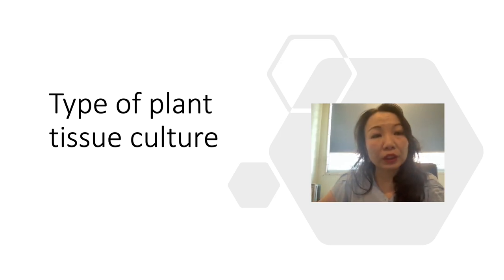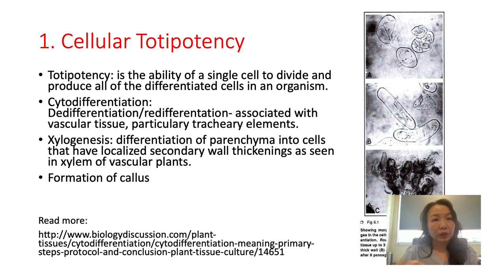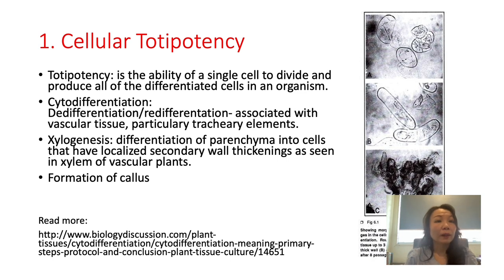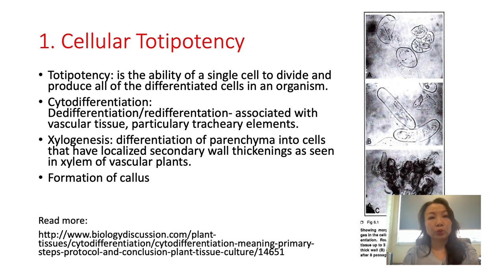Good morning everyone. Today I would like to talk about different types of plant tissue culture. Before we proceed, I would like to explain the unique part of the plant that enables it to grow or culture in vitro. Plants have a specific mechanism called totipotency, which is the ability of a single cell to divide and produce all of the differentiated cells in an organism, so a single plant cell can grow into a gamete